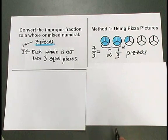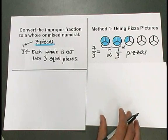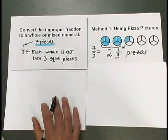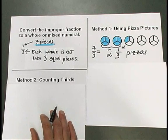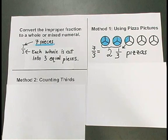It's not always easy to draw pizza pictures, so let's look at another way that we can convert 7 thirds to a mixed numeral. I call this way counting thirds.